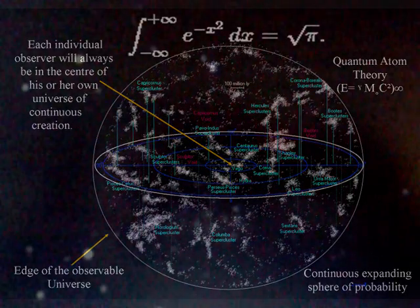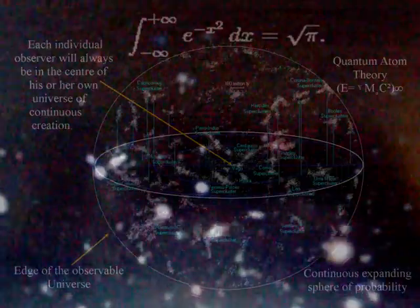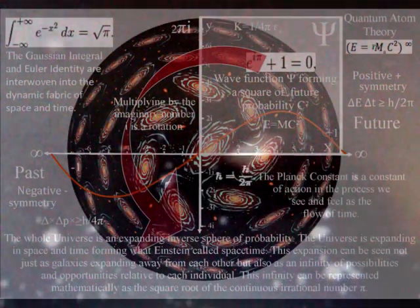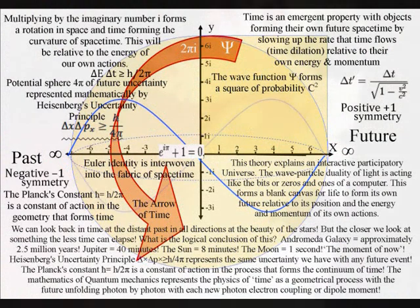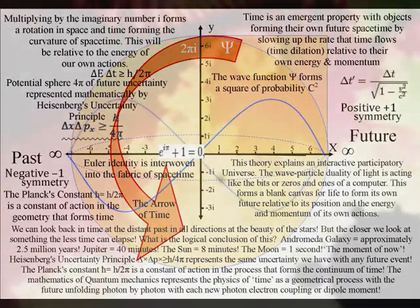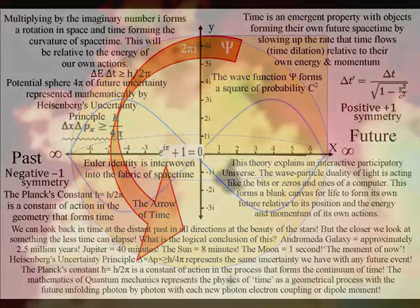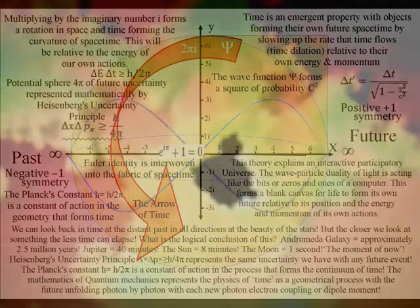It is possible to have an infinite universe within a finite sphere as long as the sphere is continuously expanding. This can be visualized in fractional geometry, where we have infinite diversity on the border of a finite geometrical object.